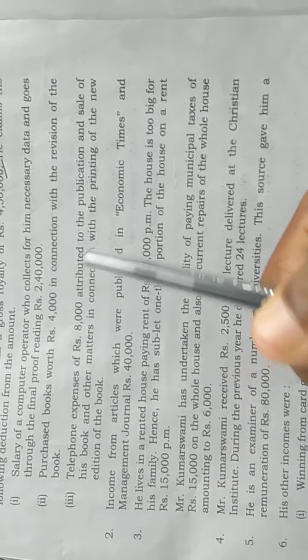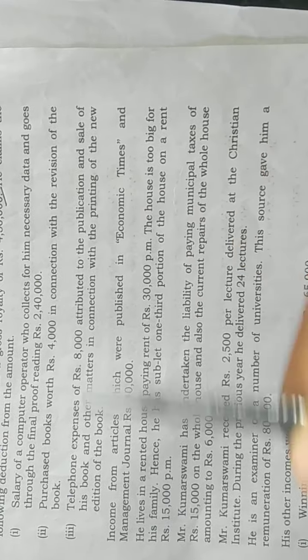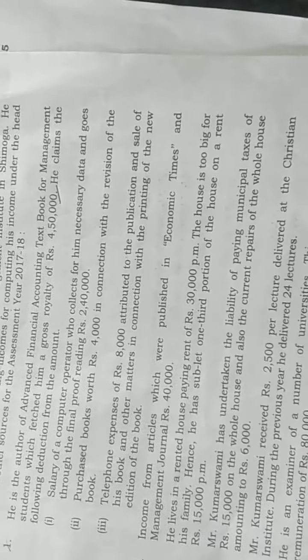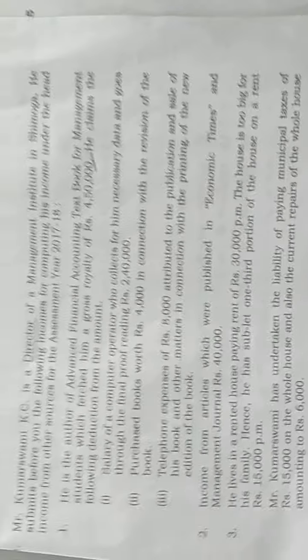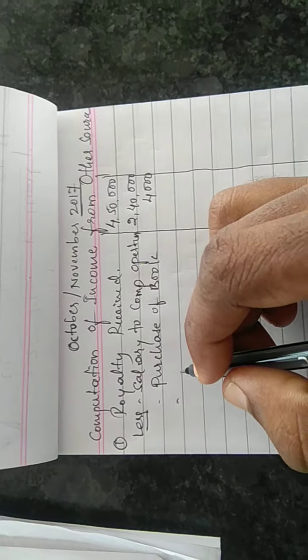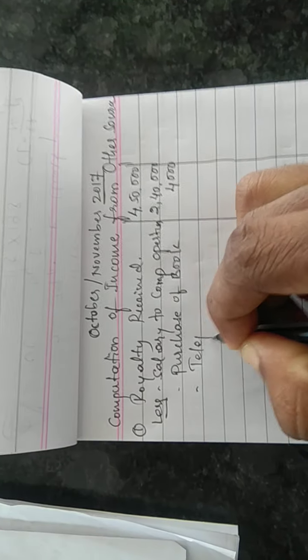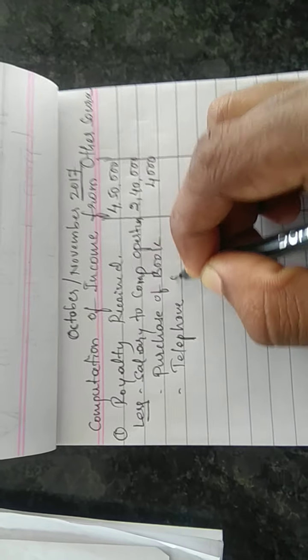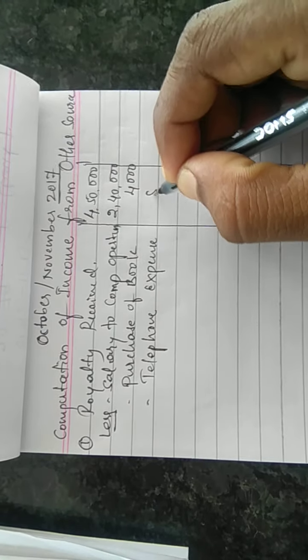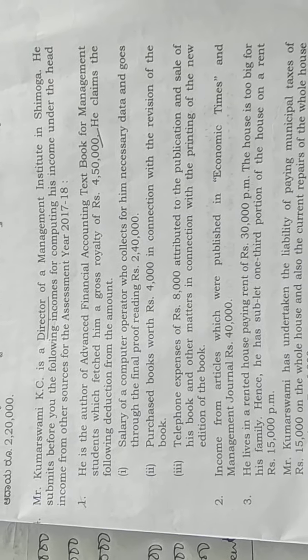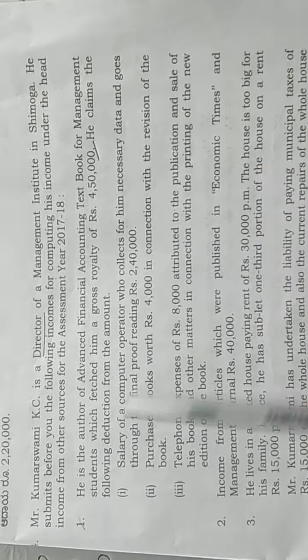Next expenditure: telephone expense of rupees eight thousand, attributed to the publication and sale of his book. These three expenditures are deducted. So two lakh forty thousand, plus four thousand, plus eight thousand equals two lakh fifty-two thousand total expenditure, giving net actual royalty income of one lakh ninety-eight thousand.